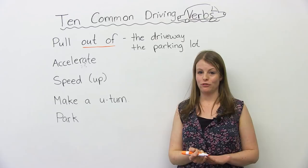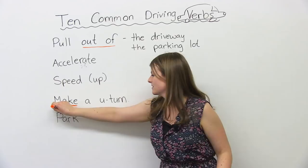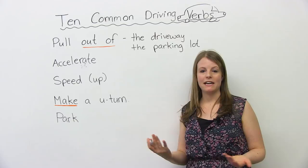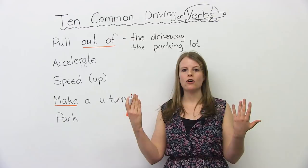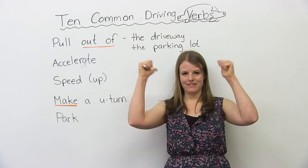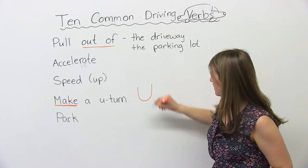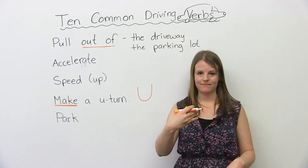Next one: make a U-turn. The verb is make — you can make a cake, make art, and you can also make a U-turn. A U-turn is when you're driving and you realize you're going the wrong way. You turn your car like the letter U — you're going one way, you turn, and go the other way.